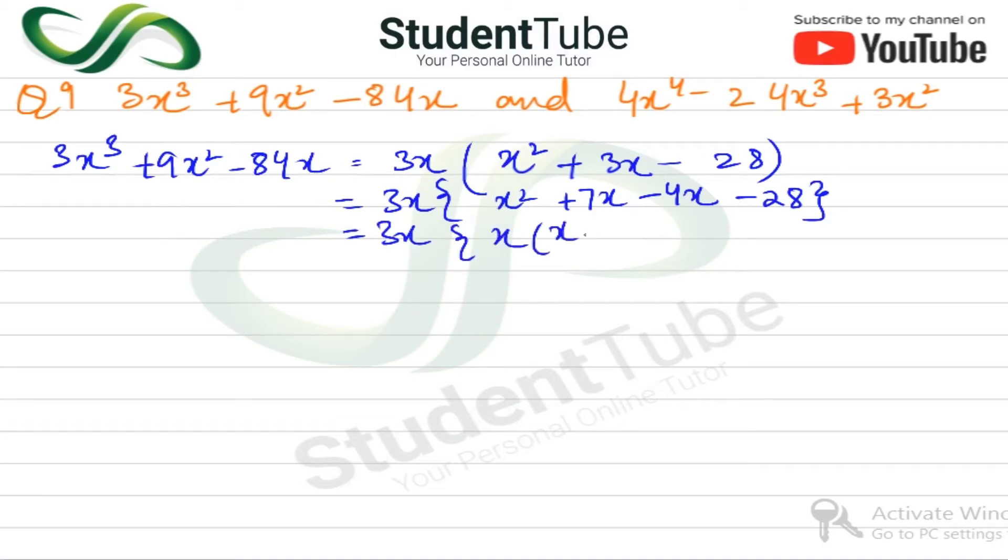After 3x common, if we have to then x + 7 minus 4 plus. So 2, 3x, 2, 3x, 2, 3x + 7 common, x - 4. This is the first polynomial answer.